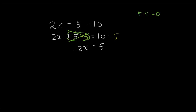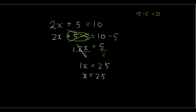Now we're going to continue solving this equation by dividing both sides by 2. If we divide the left hand side by 2 and the right hand side by 2, then 2x divided by 2 — 2 divided by 2 is 1 — so it becomes 1x equals 5 divided by 2, which is 2.5. So x equals 2.5, and we have just solved this equation using the balancing method.